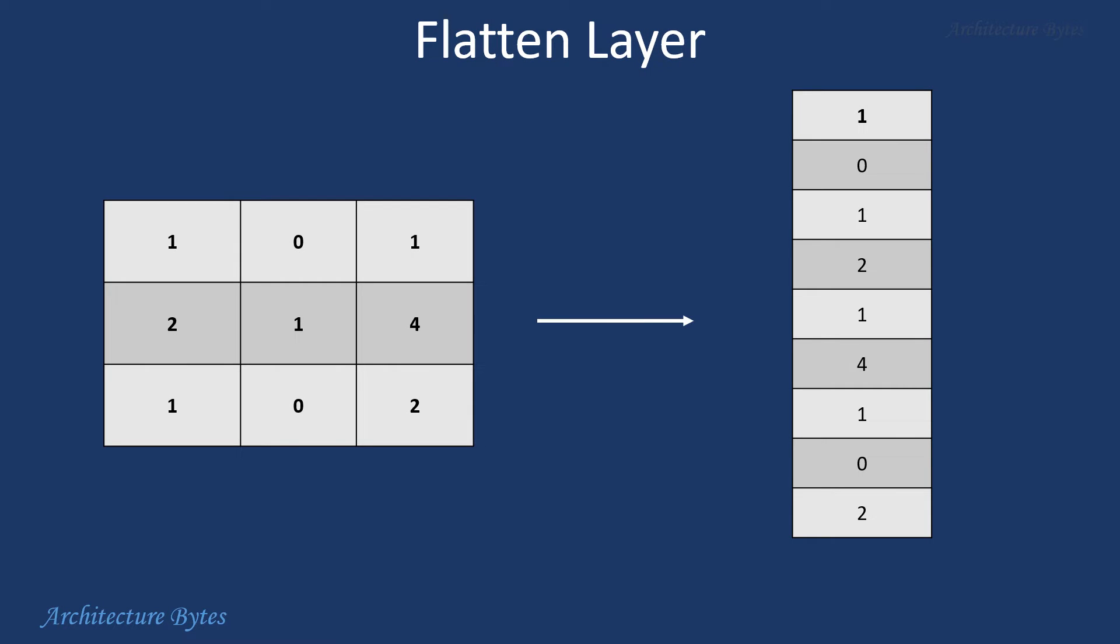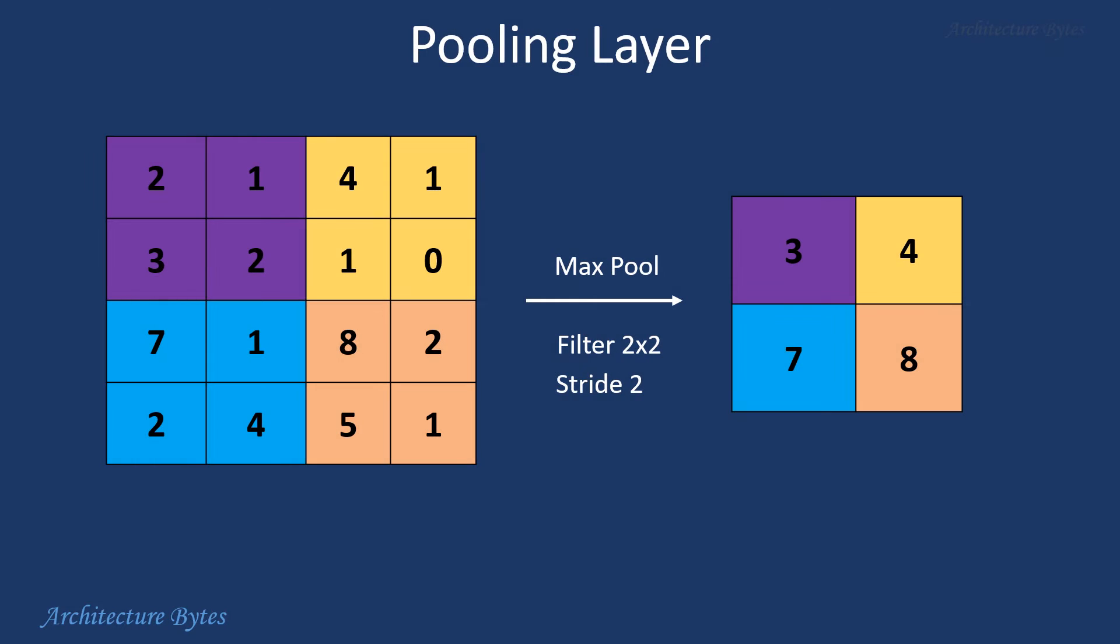Flatten layer is used to reshape data from a multidimensional format into a one-dimensional format, which can then be fed to a fully connected layer. Pooling layer could be used to reduce number of parameters and computations. There are different types of pooling operations, the most common ones being max pooling and average pooling.